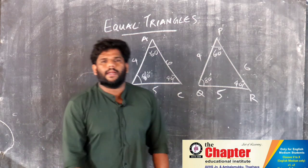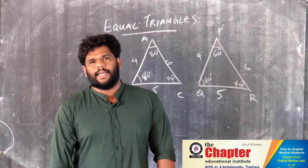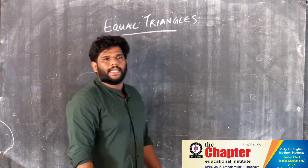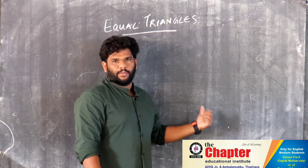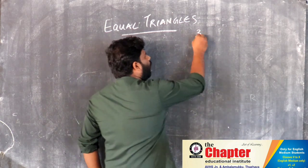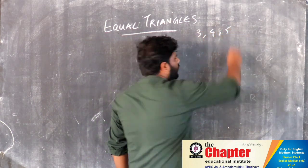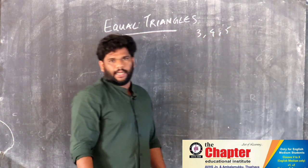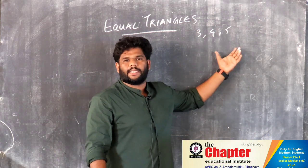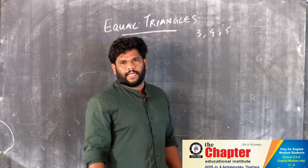Let's try this. How do we show two triangles are equal? We have three triangles, each with sides three, four, and five.